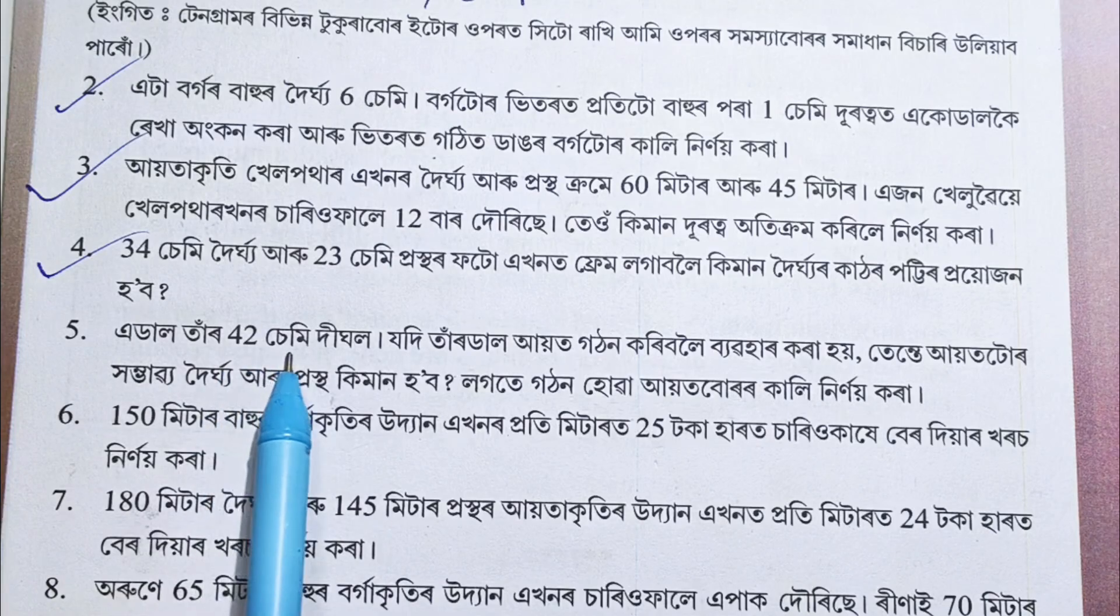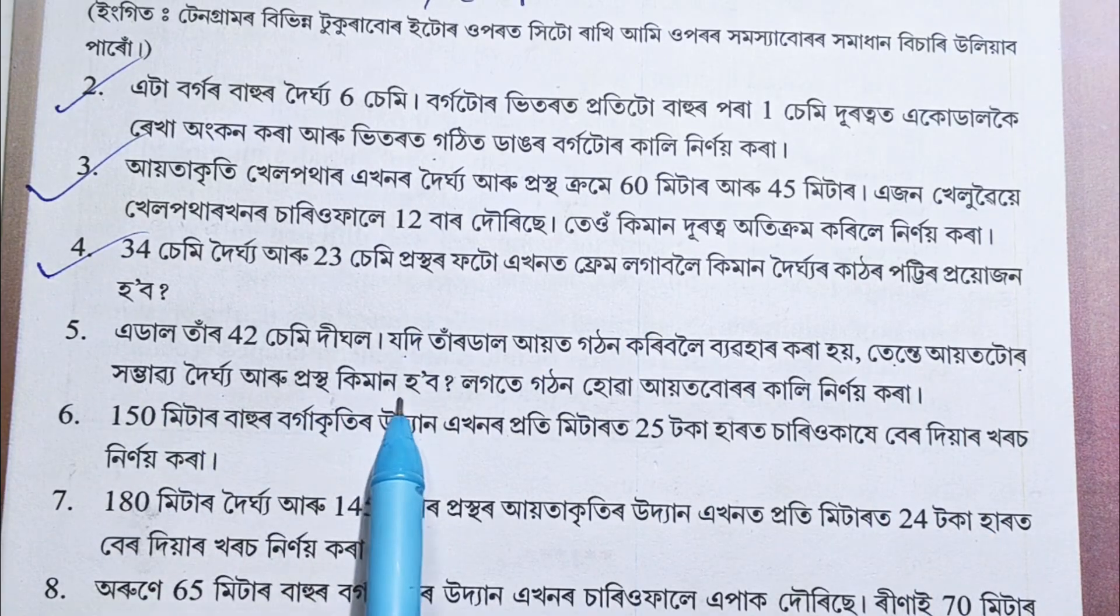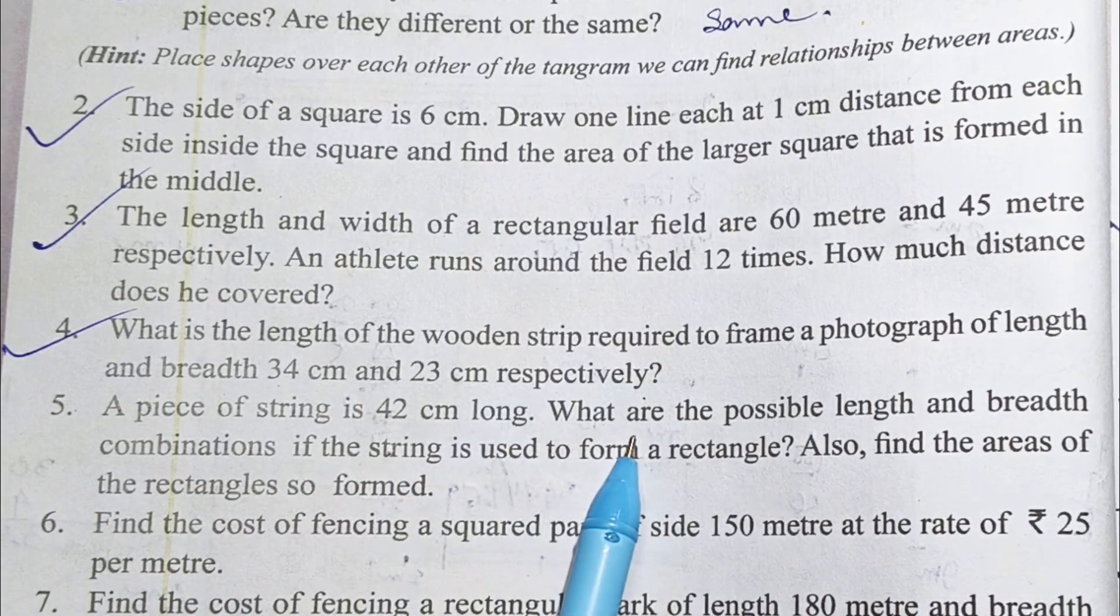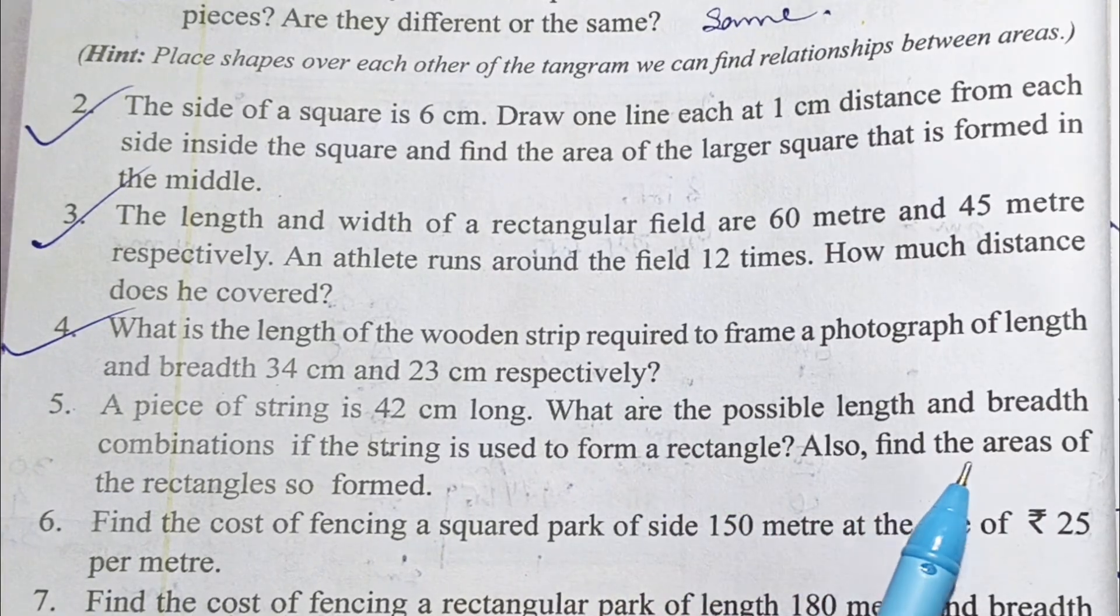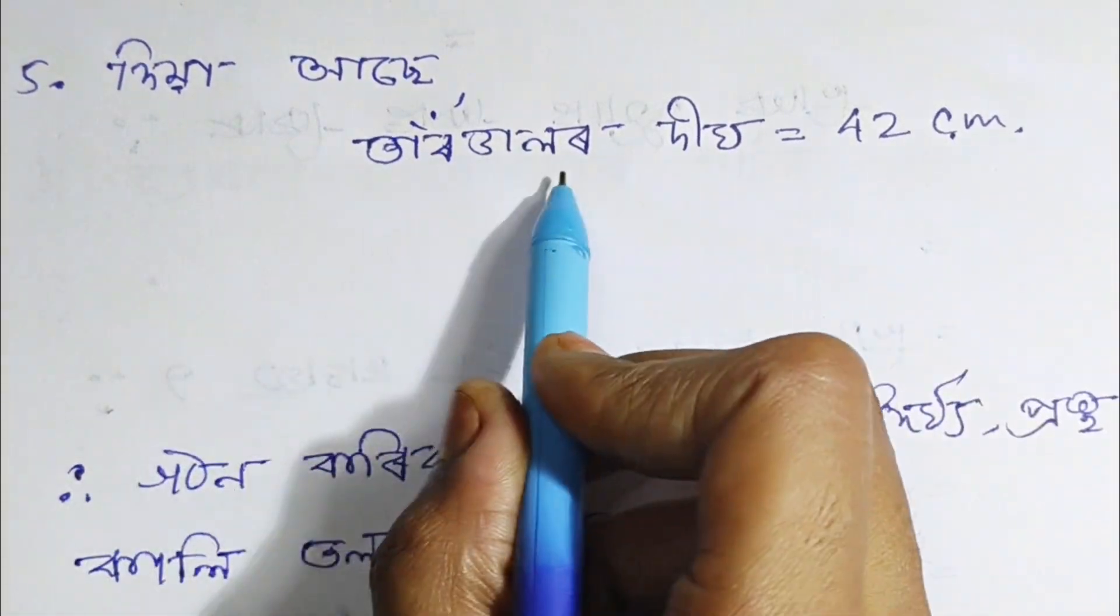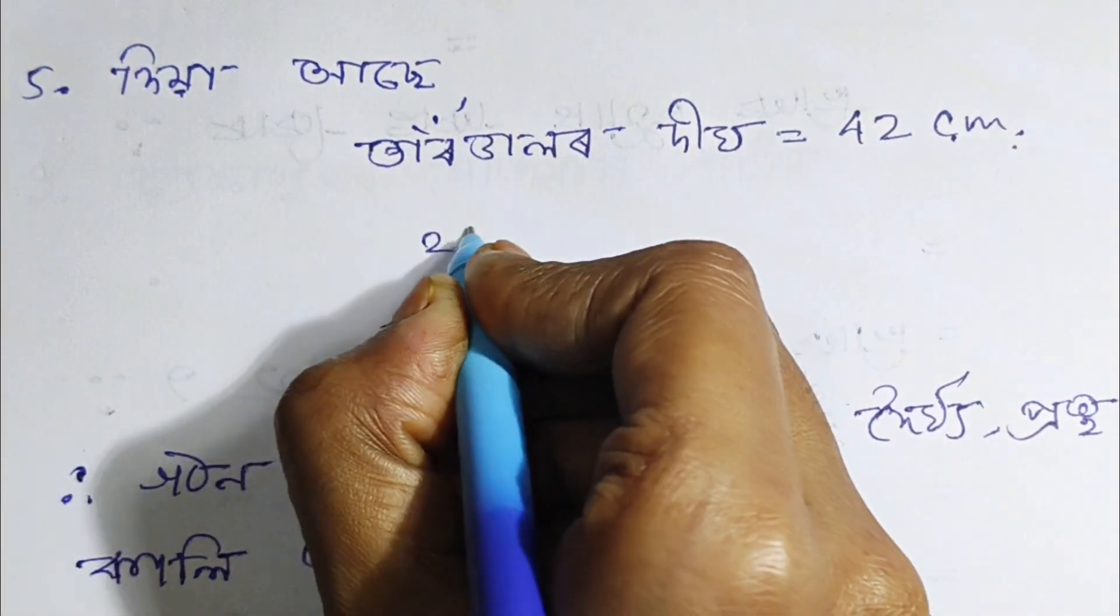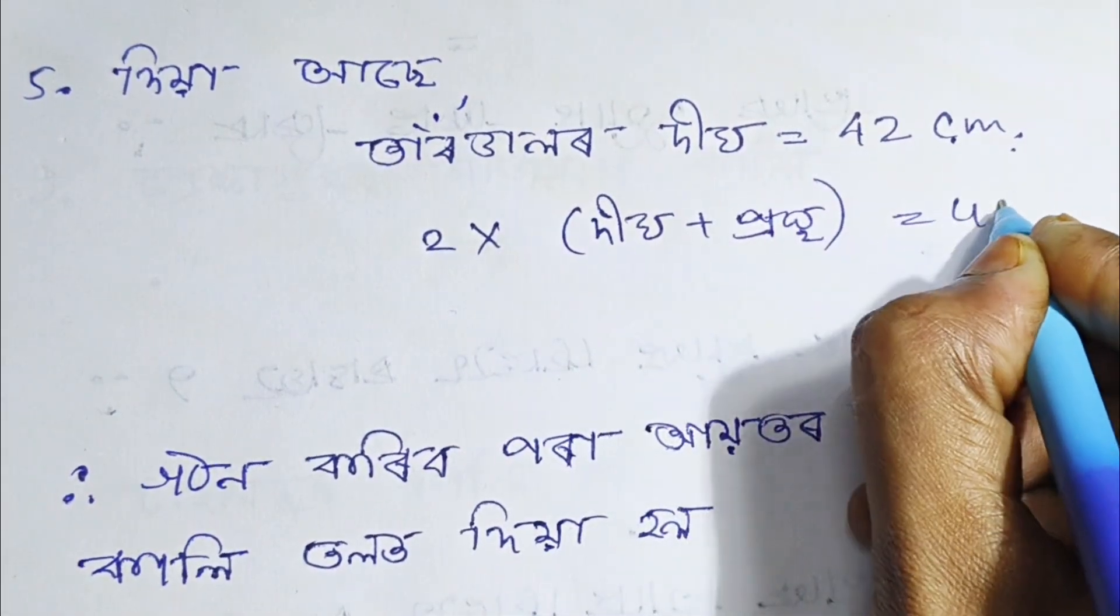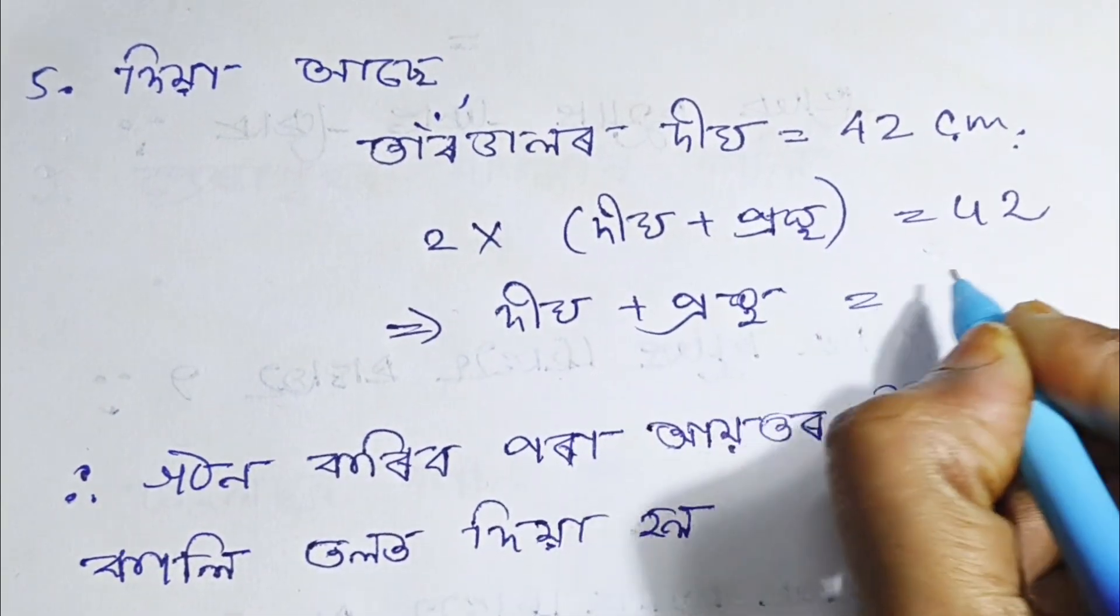Number 5: A piece of string is 42 cm long. What are the possible length and breadth combinations if the string is used to form a rectangle? Also, find the areas of the rectangles so formed. The perimeter is 42 cm, so 2 into length plus breadth equals 42, meaning length plus breadth equals 21.